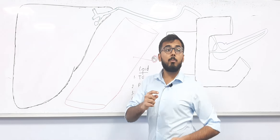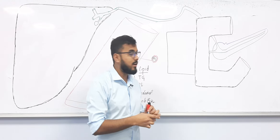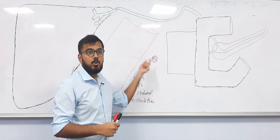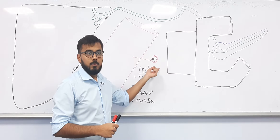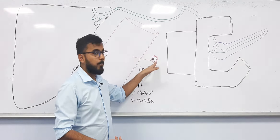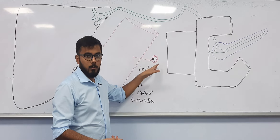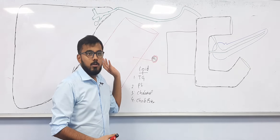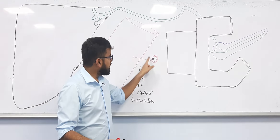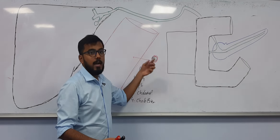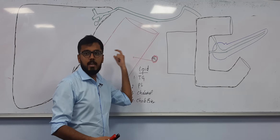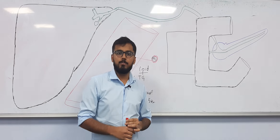When you have lipid in the center and protein surrounding it, you call this a lipoprotein. The function of lipoproteins is transport of lipids from one place to another, because lipids are non-polar and blood is polar. So we coat a protein to make it a lipoprotein and transfer it into the blood vascular system.